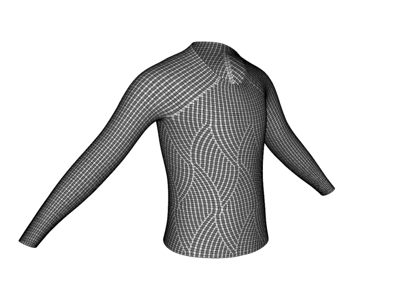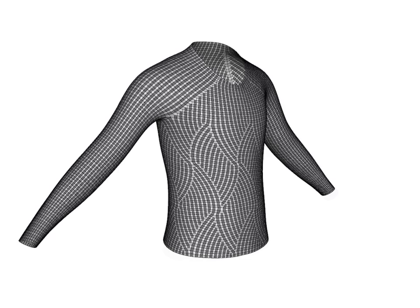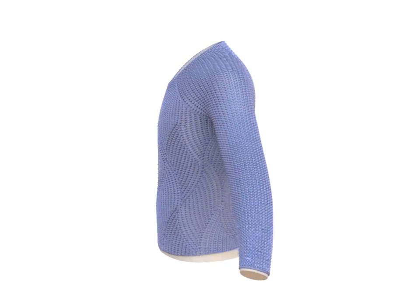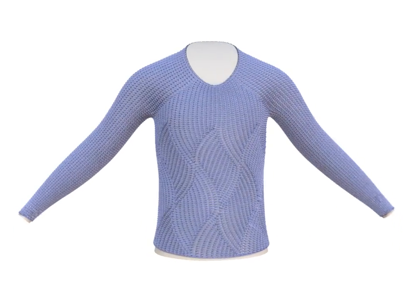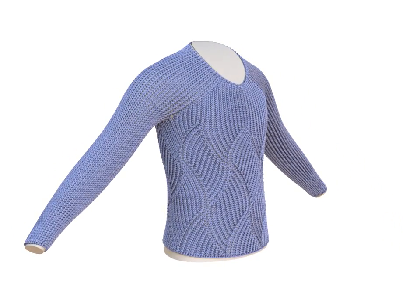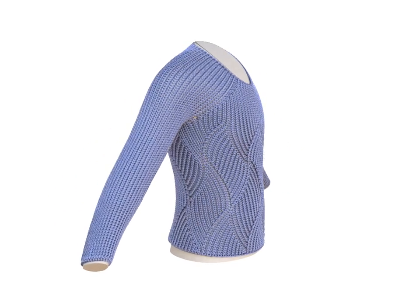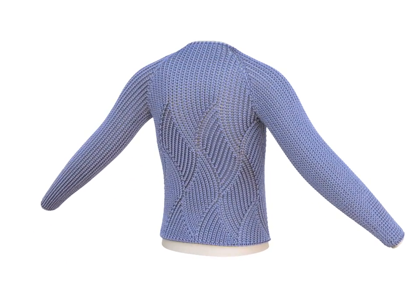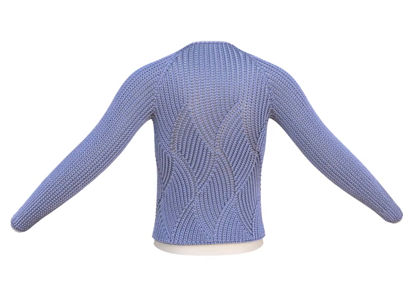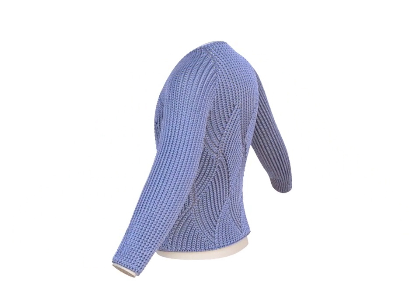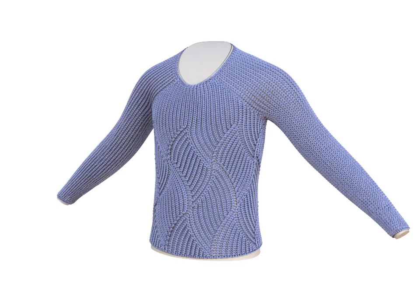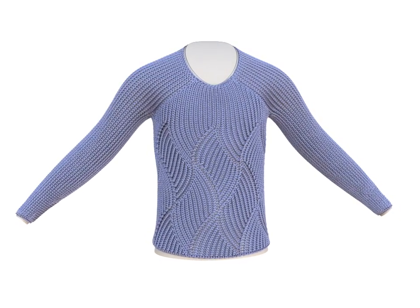After the mesh-based relaxation converges, we generate the actual yarn curves that are defined by the stitch mesh. Finally, we perform a yarn-level relaxation to compute the final realistic garment model. The details of all these procedures are explained in the paper. In the remainder of this video, we will show you example patterns and full-size knitted garments prepared using our system.